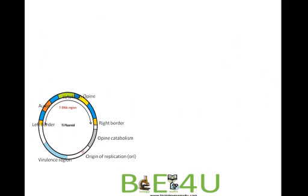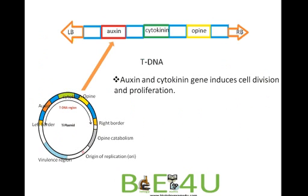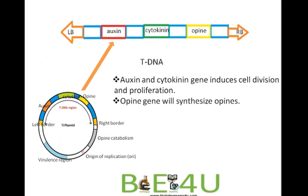Now let us look in detail at the plasmid organization. The most important region is the T-DNA region, which consists of three genes: auxin, a cytokinin gene encoding cytokinin, and an opine-encoding region. Auxin and cytokinin genes induce cell division, resulting in crown gall appearing on the plant. The opine gene synthesizes opines, which are not needed by the plant but serve as nutrients for the bacterium. Left border and right border repeats are required for successful transfer of the T-DNA region.